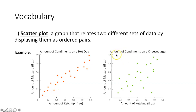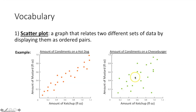Same thing over here, except this time we have the amount of condiments on a cheeseburger. Each of these points represents a single cheeseburger. The x value represents the amount of ketchup, and the y value represents the amount of mustard on that cheeseburger. There's a little difference between the two graphs, and we'll get into how you describe that difference in a second.